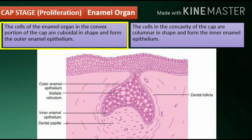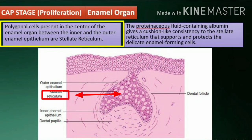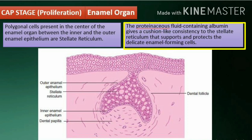Cap stage: The enamel organ shows an unequal rate of proliferation in different parts instead of uniform expansion. This leads to a stage where the enamel organ looks like a cap. The cells in the convex portion of the cap are cuboidal in shape and form the outer enamel epithelium. The cells in the concavity of the cap are columnar in shape and form the inner enamel epithelium. Polygonal cells present in the center between the inner and outer enamel epithelium form the stellate reticulum. The proteinaceous fluid containing albumin gives a cushion-like consistency to the stellate reticulum, which supports and protects the delicate enamel-forming cells.